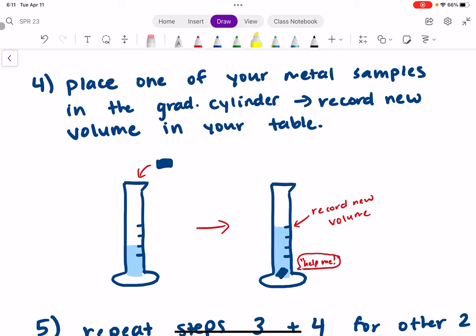And then step four, you're going to place one of your metal samples into the graduated cylinder that you just filled with water, and you're going to record the new volume in your table. So it's going to raise the water level up and you're going to record that new volume.